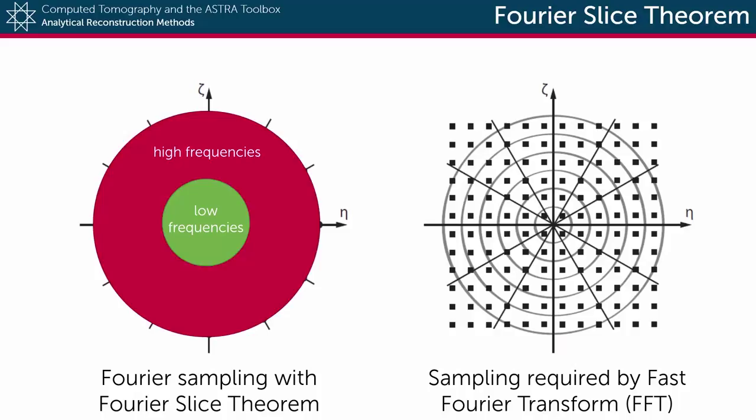The high frequencies however, which is where most of the finer details of the object are located, are not that greatly sampled and will not be accurately reconstructed after the inverse Fourier transform. And this will lead to very blurry images.